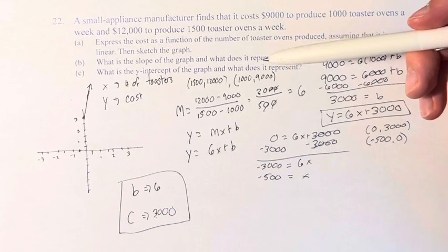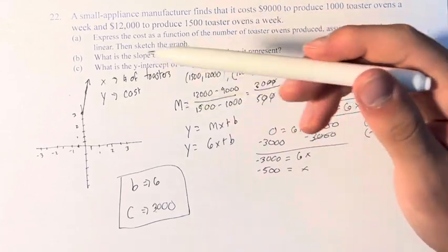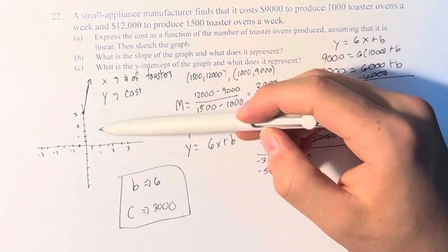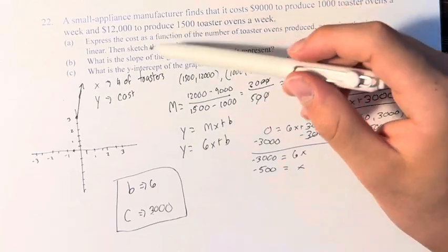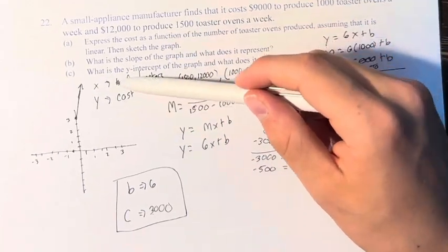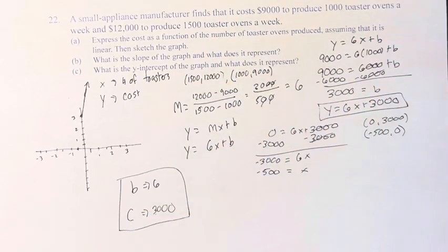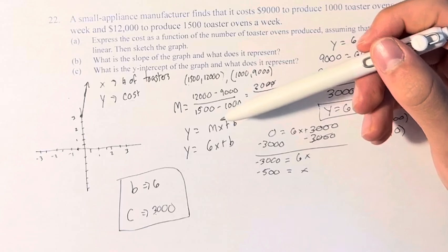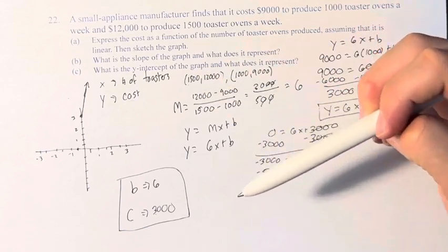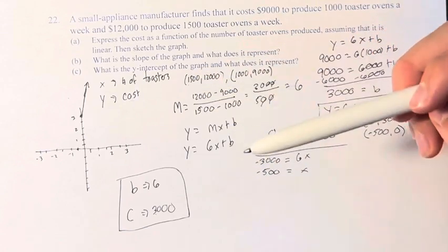We're also asked, what do they actually represent? So the slope of the graph is the change in y over x. So it's the change in cost per toaster oven. So that means that if we increase by one more toaster oven, it's going to cost 6 more dollars. So it's basically the cost to produce one toaster oven a week more than before.